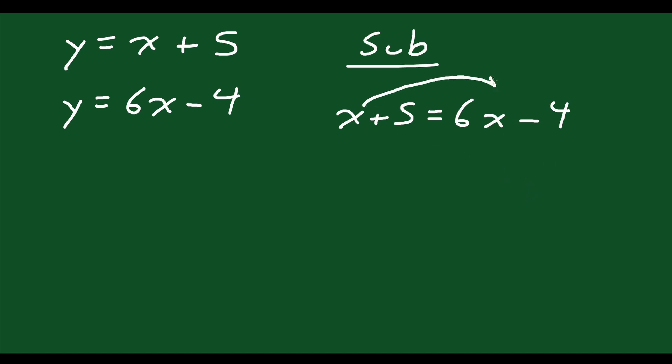So now we solve for x. So I bring this x to the right-hand side, I can bring this negative 4 to the left-hand side, and I'll have 5 plus 4 equals 6x minus x, or in other words 9 equals 5x, divide both sides by 5, x equals 9 over 5.